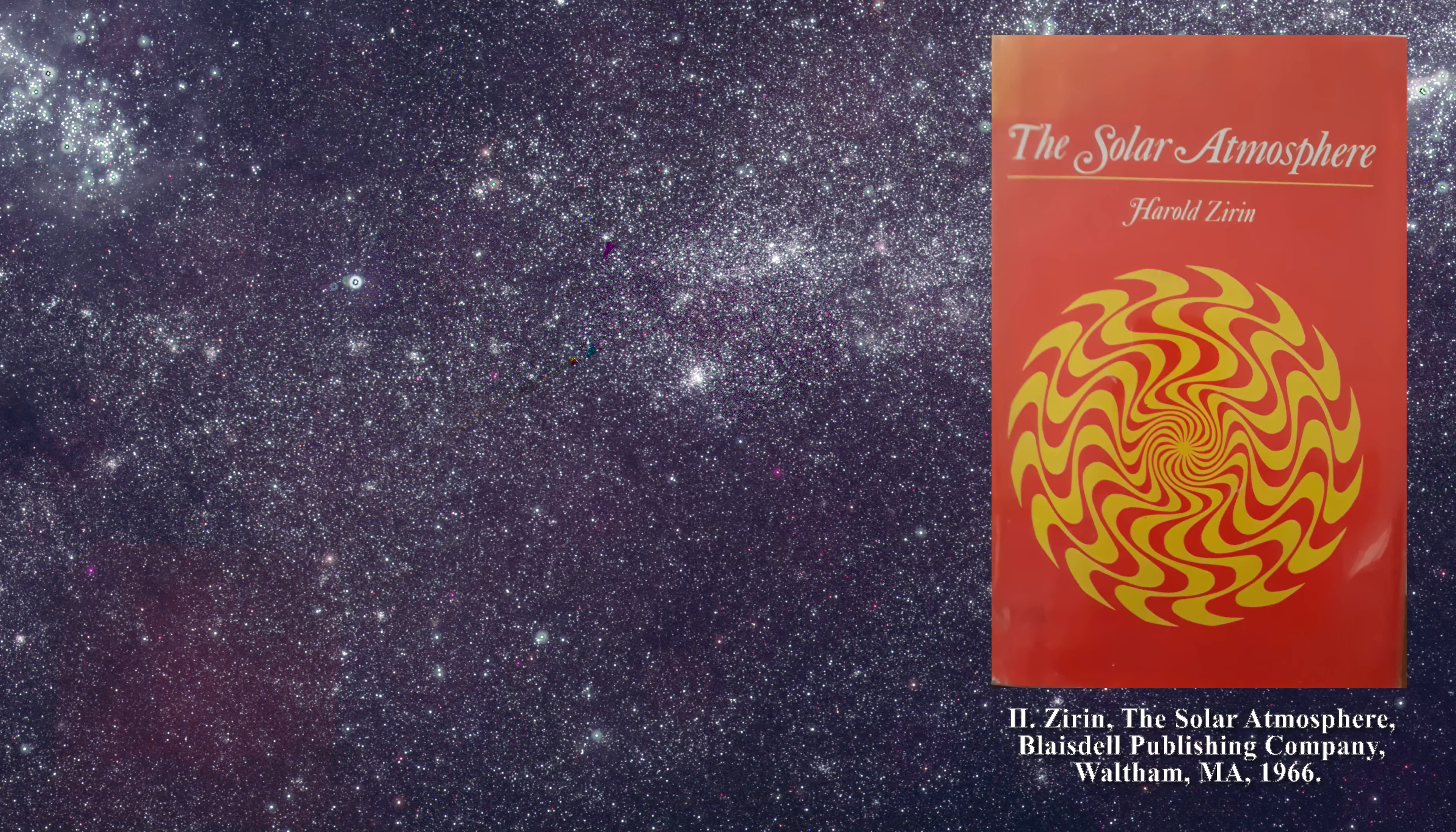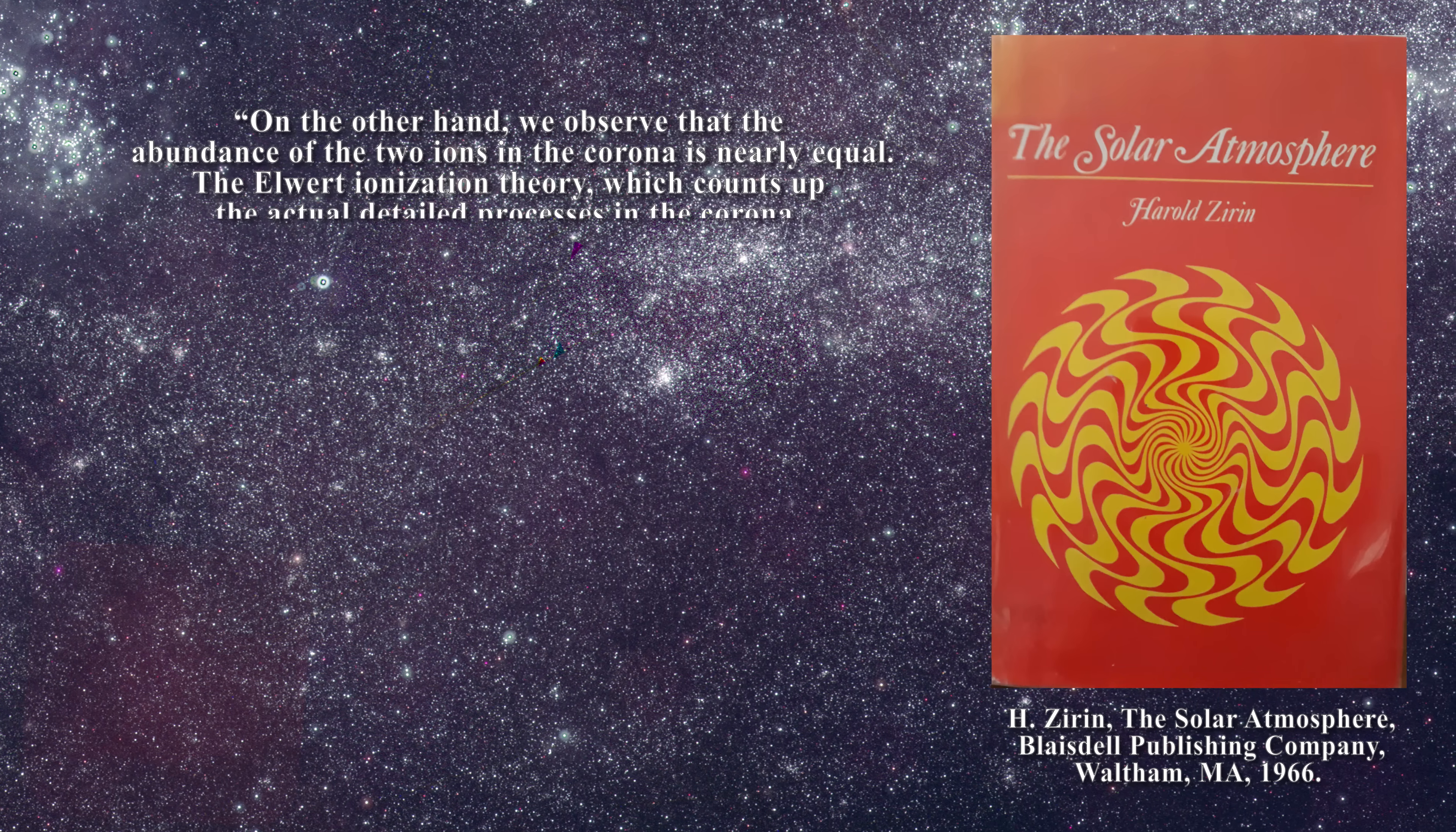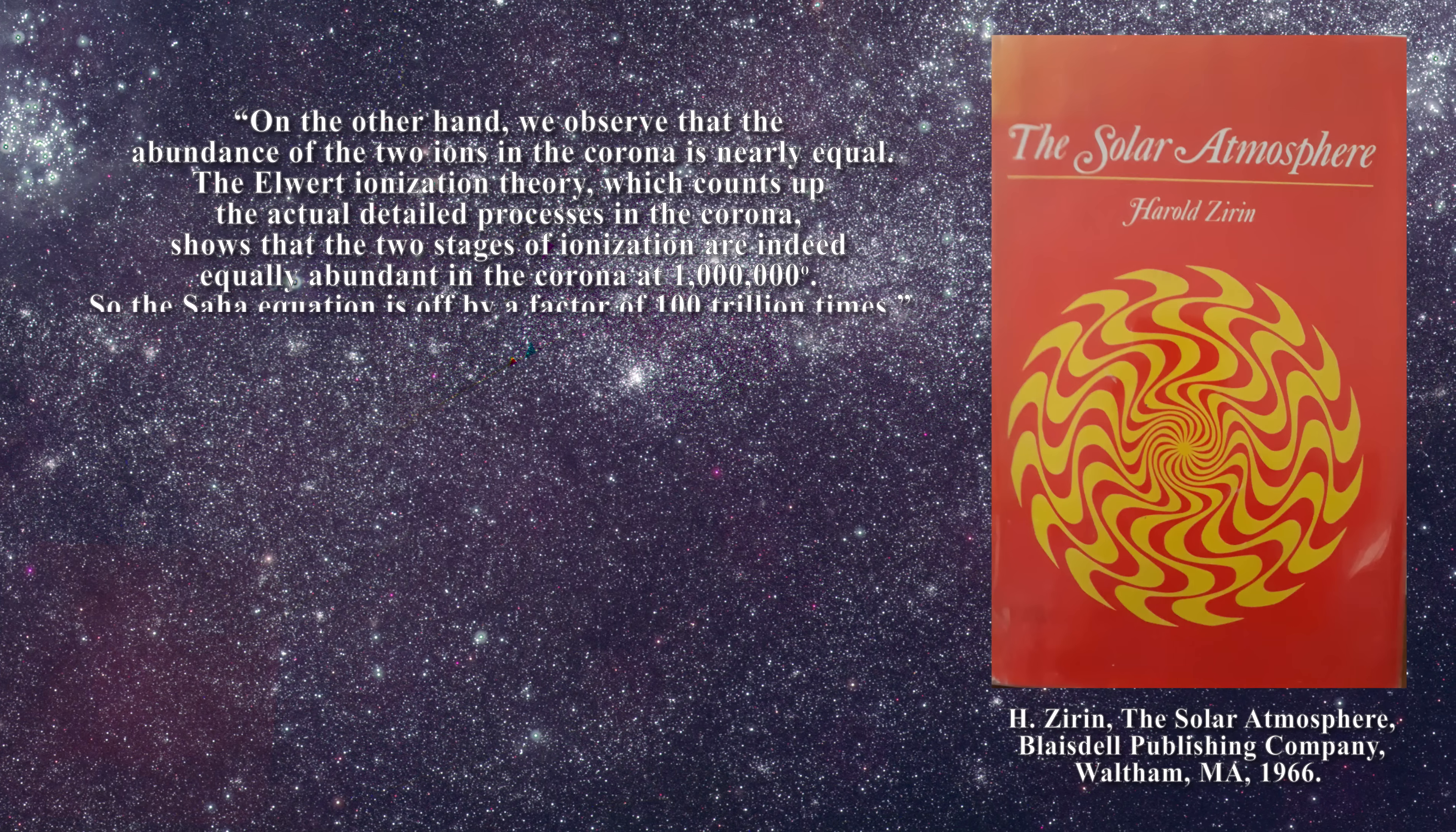Here is an important quote. On the other hand, we observe that the abundance of the two ions in the corona is nearly equal. The L-word ionization theory, which counts up the actual detailed processes in the corona, shows that the two stages of ionization are indeed equally abundant in the corona at a million degrees.